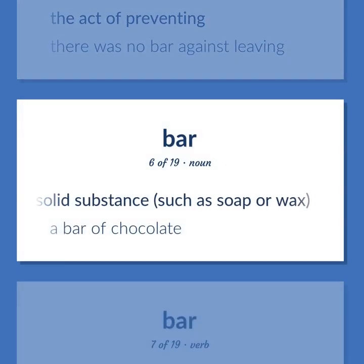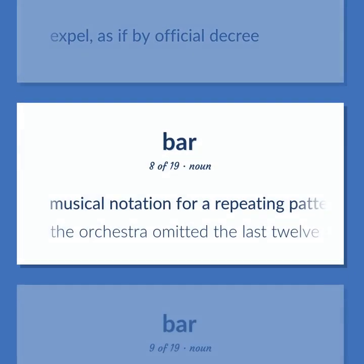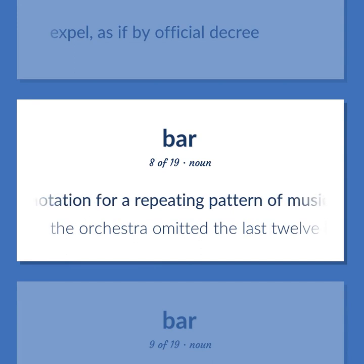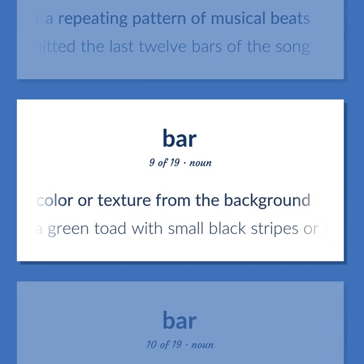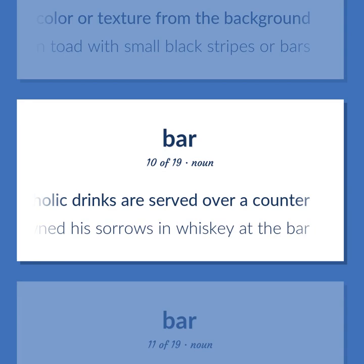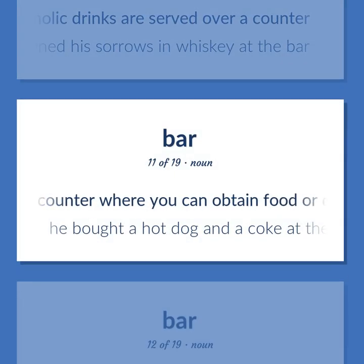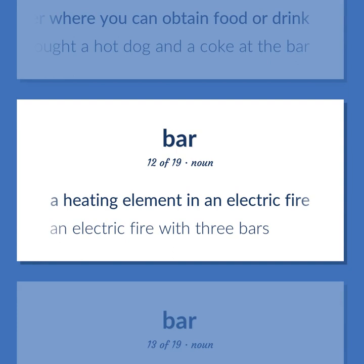Bar: expel, as if by official decree. Musical notation for a repeating pattern of musical beats — 'The orchestra omitted the last 12 bars of the song.' A narrow marking of a different color or texture from the background — 'A green toad with small black stripes or bars.' A room or establishment where alcoholic drinks are served over a counter — 'He drowned his sorrows in whiskey at the bar.' A counter where you can obtain food or drink — 'He bought a hot dog and a coke at the bar.' A heating element in an electric fire — an electric fire with three bars.